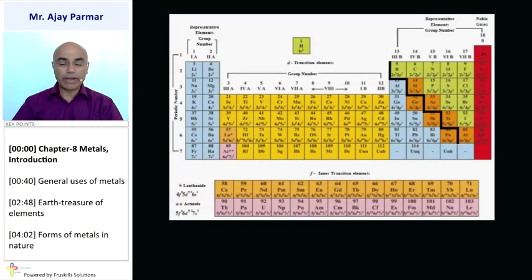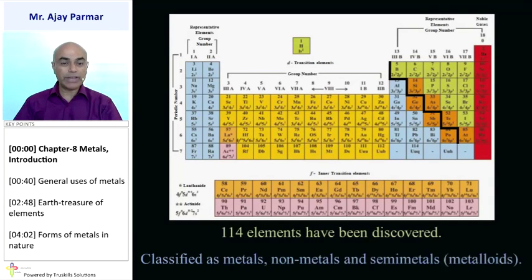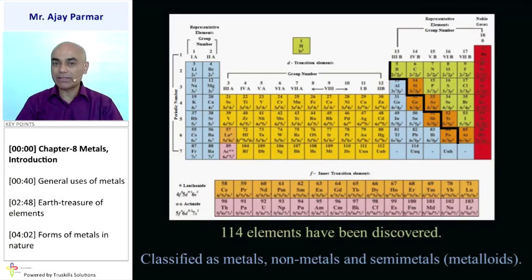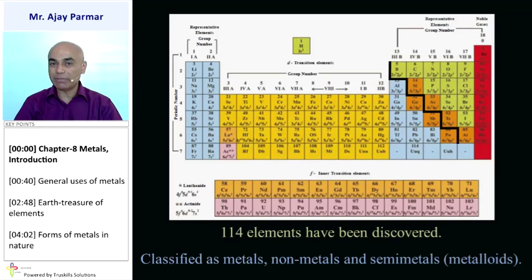Out of all the elements that we know at the present day, we know 114 elements discovered up till now. Out of these 114 elements, most of them are classified as metals, some of them are non-metals, and some of them are semi-metals. As you can see, there is a zigzag line on this periodic table. The elements adjoining that zigzag line — which you already studied in 9th standard — are considered to be the semi-metals.